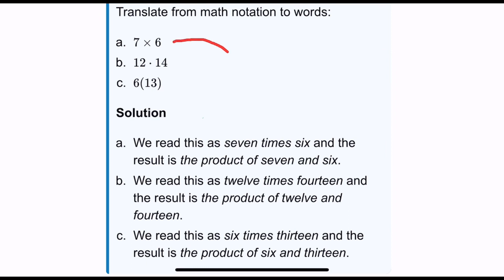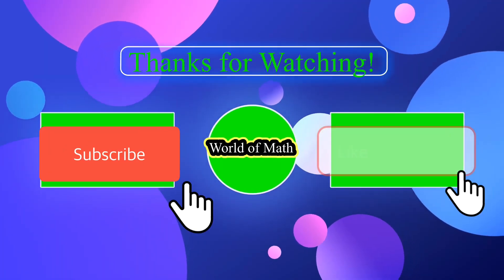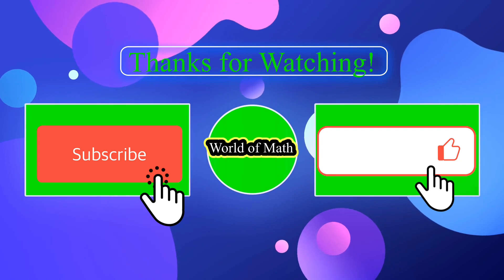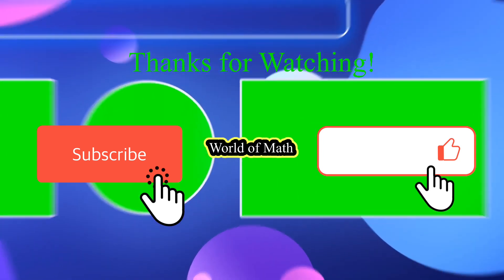Here are the solutions to the given examples. For letter A, we read this as 7 times 6, and the result is the product of 7 and 6. For letter B, we read this as 12 times 14, and the result is the product of 12 and 14. And for letter C, we read this as 6 times 13, and the result is the product of 6 and 13.